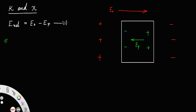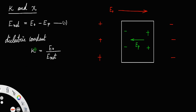Now, by the definition of dielectric constant, we have k equal to the external applied field divided by the net field. This is by definition. You can write this as k = E₀ / E_net, where E_net = E₀ − E_p. Let us call this equation number 2.